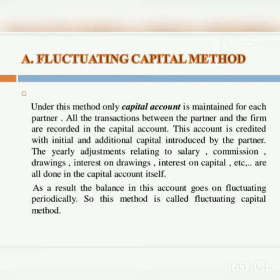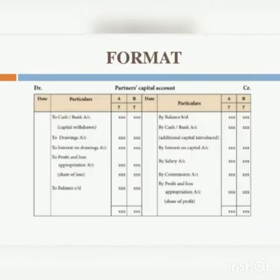The format of the partnership capital account under the fluctuating capital method is as follows. This account is credited with the balance, cash, interest on capital, salary, commission, or any profit. It is debited with the debit balance if any, then drawings, interest on drawings, or loss. The closing balance may be either a debit balance or a credit balance.